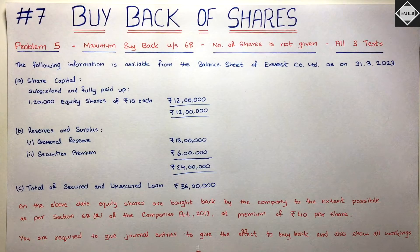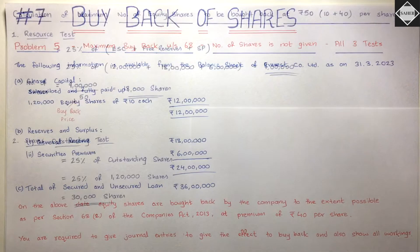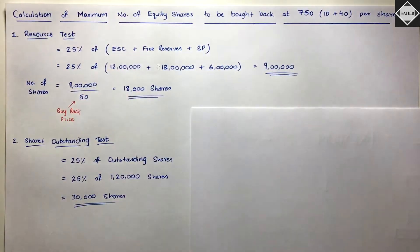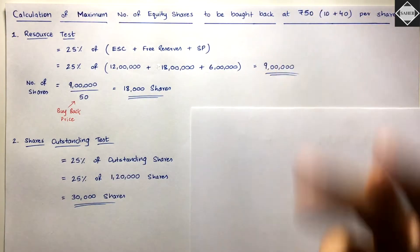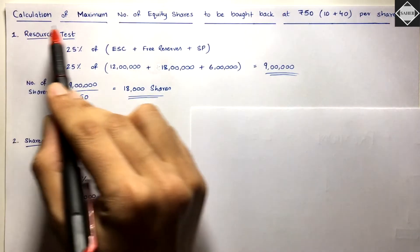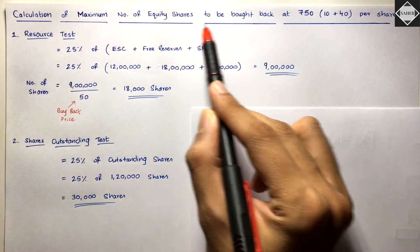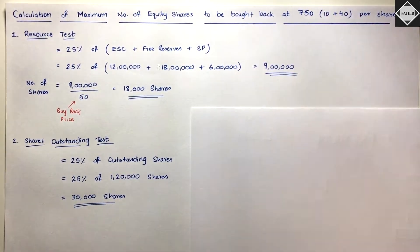You are required to give the journal entries to give effect to the buyback and show all workings. Now let's see the solution. First, since we don't know how many shares to buy back, we need to calculate that - the maximum number of equity shares to be bought back at the buyback price of ₹50 per share.